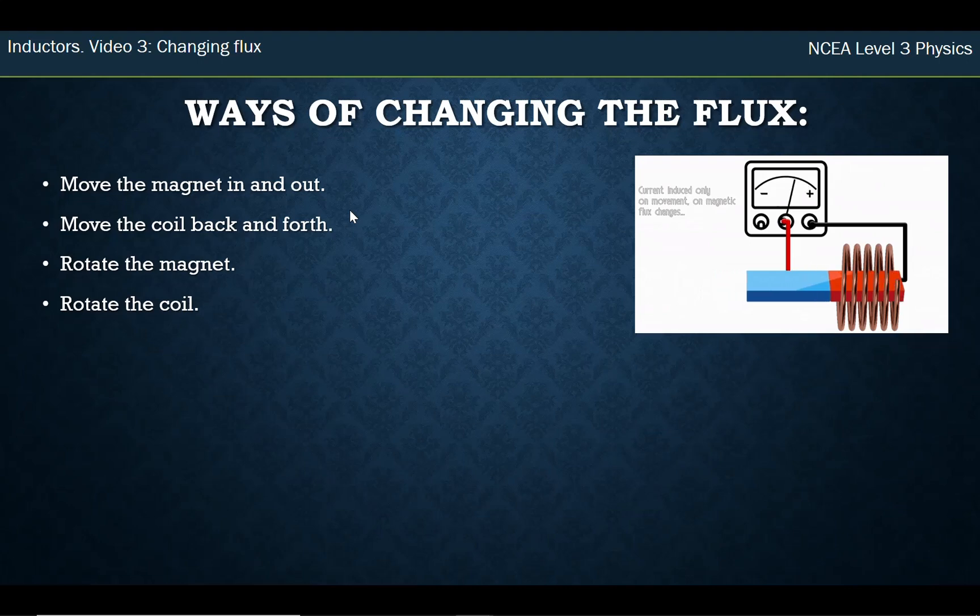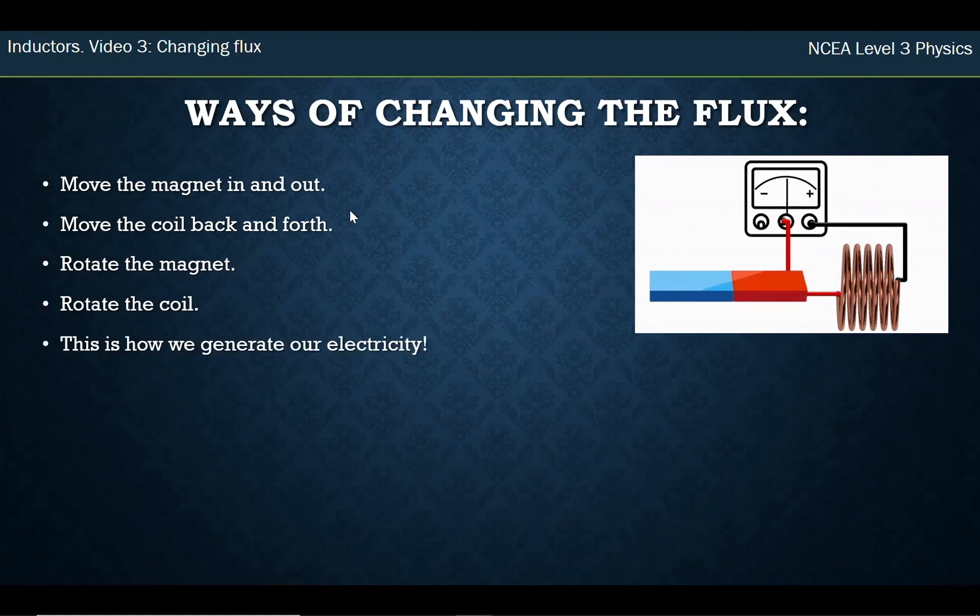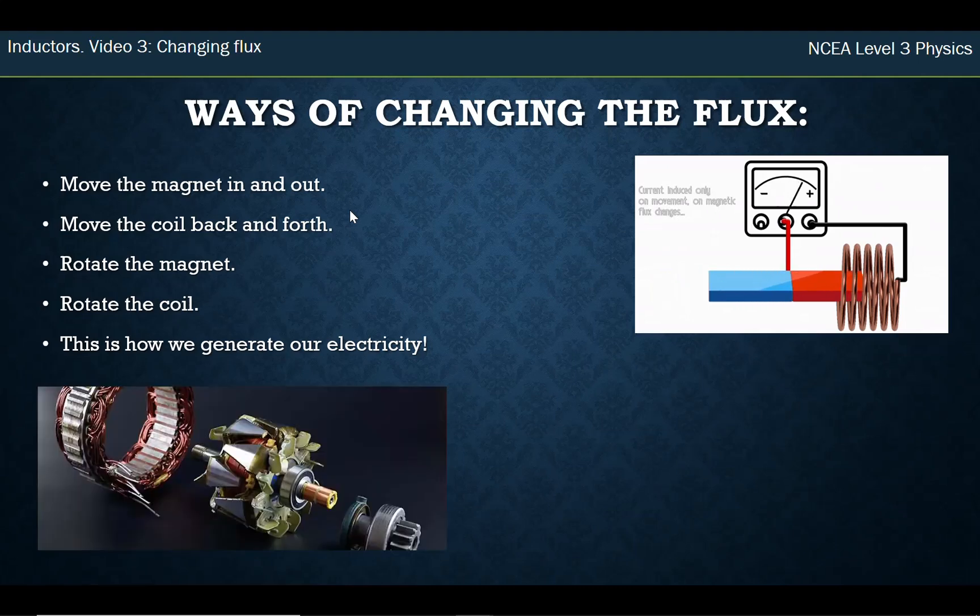The electricity in New Zealand, apart from solar panels you're using in your home to light your house or for your oven to heat your hot water, is generated by something changing flux near a coil. Generally, the way we do that is we either rotate a coil or rotate a magnet.